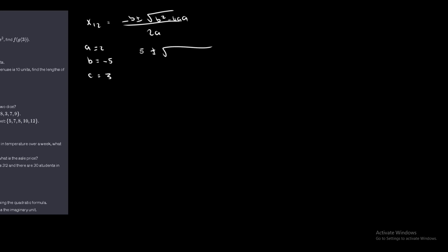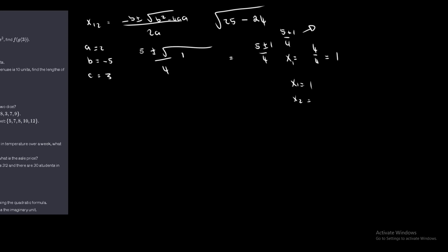We have negative 5 squared, which is 25. Now for the discriminant: 25 minus 4 times 2 times 3. So 4 times 2 is 8, and 8 times 3 is 24, giving us 25 minus 24 equals 1. Over 2 times 2, which is 4. So it simplifies to 5 plus or minus 1 over 4. Therefore x₁ is 4 over 4, which equals 1. And x₂ is 5 plus 1 over 4, which is 6 over 4, equal to 1.5 or 3/2.